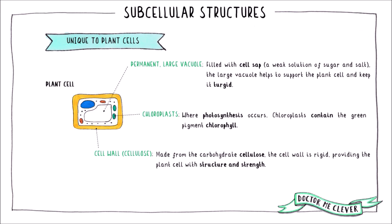And finally, the cell wall, made from the carbohydrate cellulose. The cell wall is rigid and provides structure and strength to the plant cell.